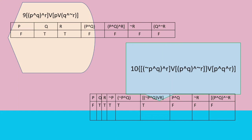For number 10, P is false, Q is true, R is true. The negation of P is true. Negation of P conjunction Q makes the statement true. If negation of P conjunction Q is true and conjunction R is true, this makes the statement true. P conjunction Q is false, negation of R is false, making that part false. Negation of P conjunction Q conjunction R is true, and disjunction P conjunction Q conjunction negation R is true, making the statement true. Q conjunction R is true, then P conjunction Q conjunction R is false. In all, the final statement is true.